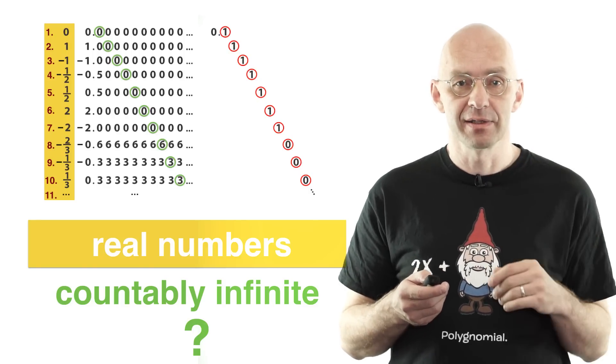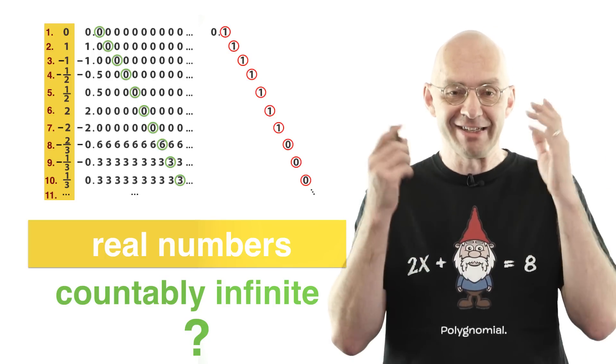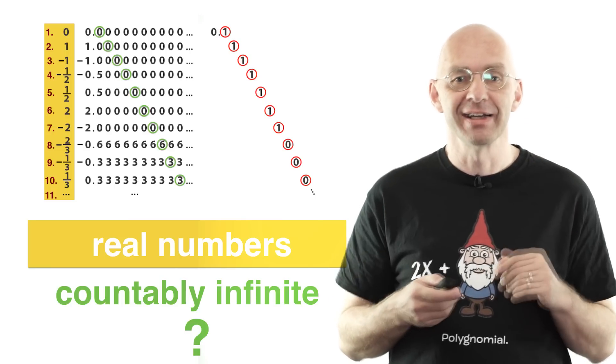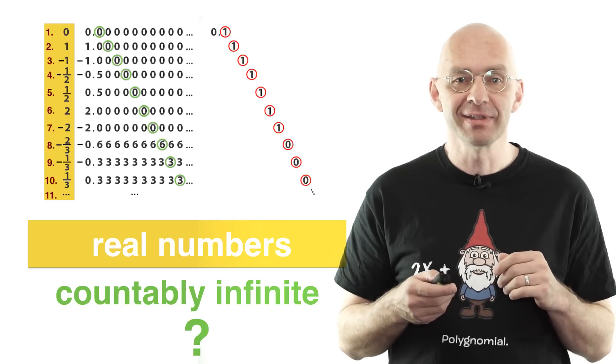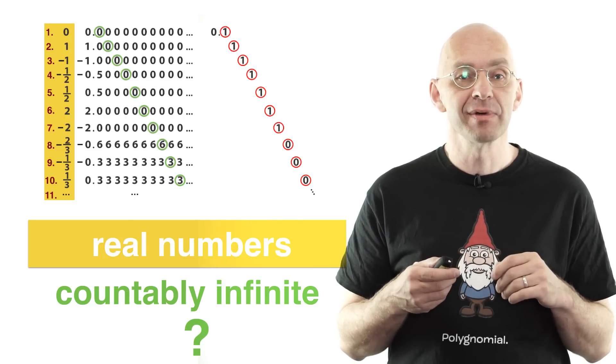Well, obviously not, because if they were countable, diagonalization would produce a real number outside the set of real numbers. Well, that's obviously not possible. That would be a really transcendental number. Okay, anyway, it's not possible to construct a real number outside the real numbers. And so since this is not possible, this means that the real numbers cannot be listed.